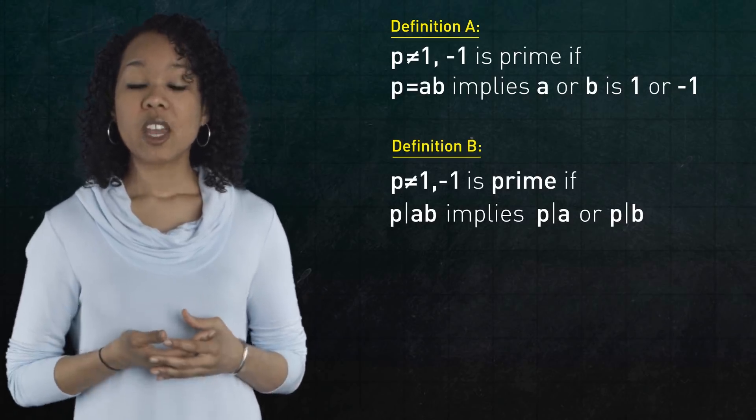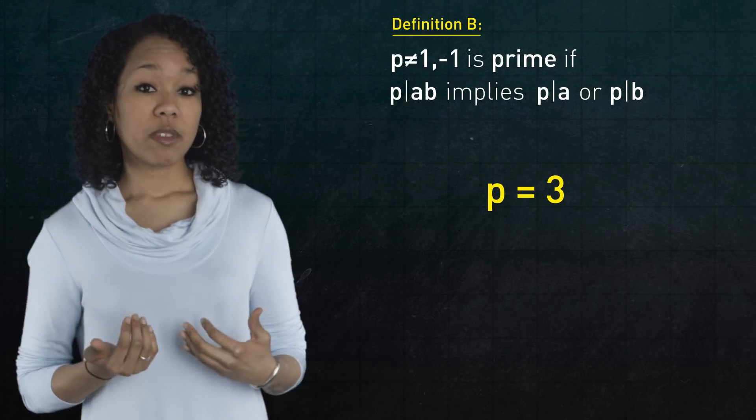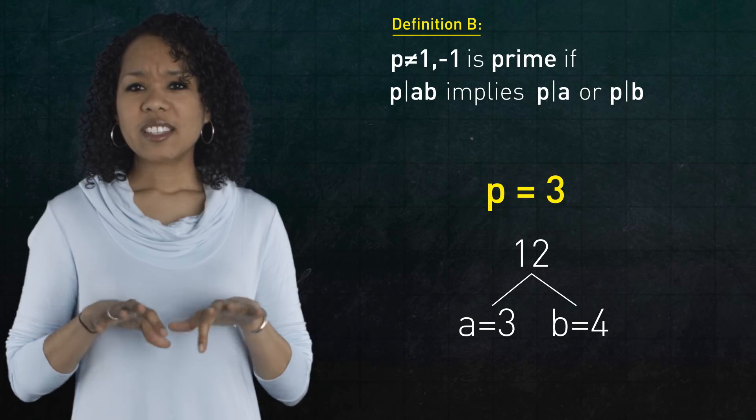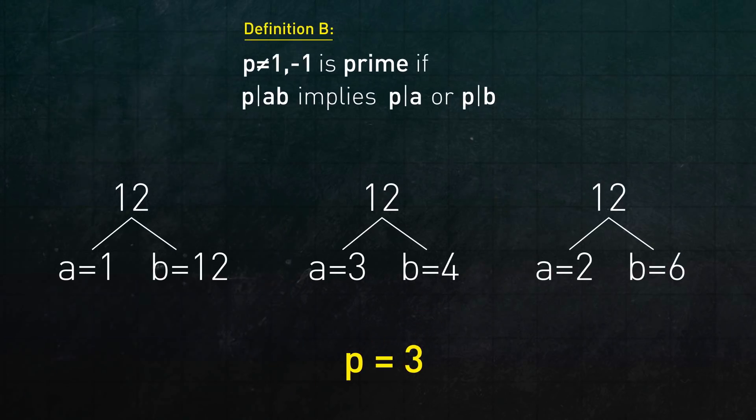Here's an example. Suppose our prime is 3. And notice that 3 divides 12, for instance. Now look at the different ways 12 can be factored as a product of two numbers. What do you see? No matter how we write 12, 3 always divides one of the two factors. You may think that's a silly observation, but it does not hold for composite or non-prime numbers. For example, 4 also divides 12, but 4 does not divide 2, nor does it divide 6.